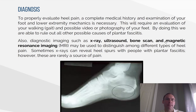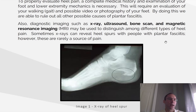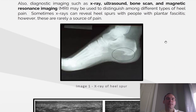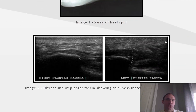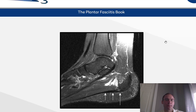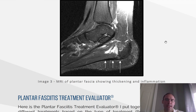Diagnosis. To properly evaluate heel pain, a complete medical history and examination of your foot and lower extremity mechanics is necessary. This will require an evaluation of your walking, gait, and possible video or photography of your feet. By doing this, we are able to rule out all of the possible causes of plantar fasciitis. Also, diagnostic imaging such as an x-ray, ultrasound, bone scan, and magnetic resonance imaging (MRI) may be used to distinguish among different types of heel pain. Sometimes x-rays can reveal heel spurs with people with plantar fasciitis. However, these are rarely a source of pain. Image one: x-ray of heel spur. Image two: an ultrasound of plantar fascia showing increased thickness on the left side. Image three: MRI of plantar fascia showing thickening and inflammation.